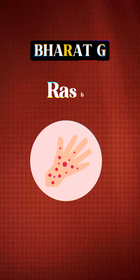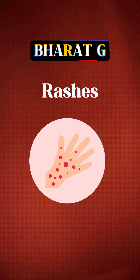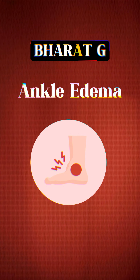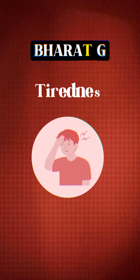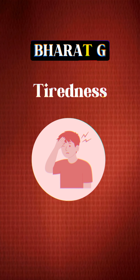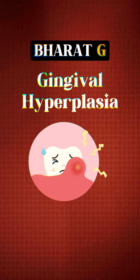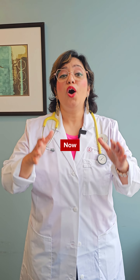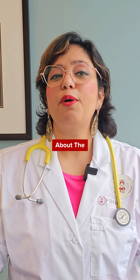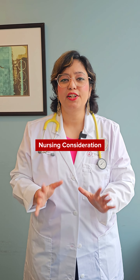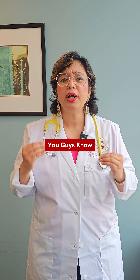Continuing with 'BHARAT G': R stands for rashes, A stands for ankle edema, T stands for tiredness, and G stands for gingival hyperplasia, which means the patient will have overgrowth on the gums.